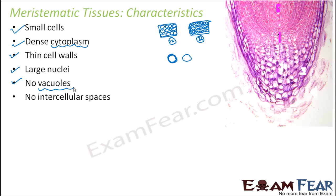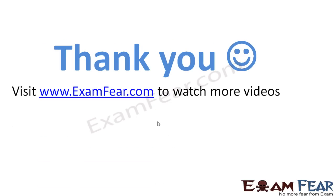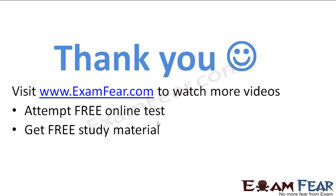Finally, meristematic tissues have no intercellular spaces — they are very compactly arranged. Leaving too much intercellular space would defeat the purpose; the goal is to have as many cells as possible in a small area so that more new cells can be formed by cell division. These are the key characteristics of meristematic tissues, and all their features support active cell division. Please visit examfew.com to watch more videos, attempt free online tests, get free study material, and find tutors and mentors.